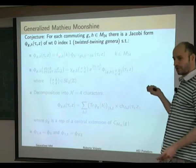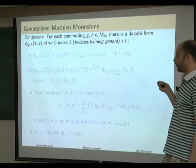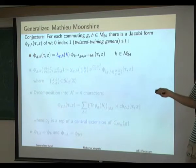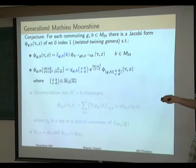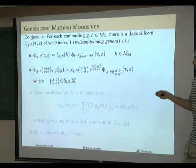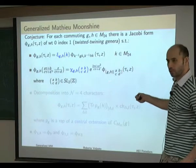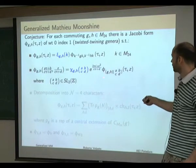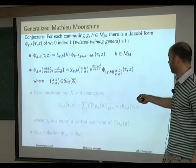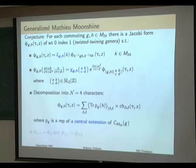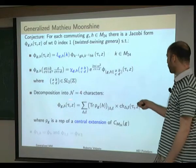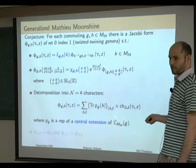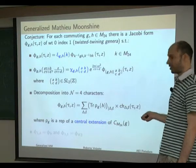The twisted twining genera can be given by a path integral with twisted periodicity conditions, and we expect this path integral to be invariant under some subgroup of SL(2,Z) that preserves these conditions up to conjugation in the group G. These properties help us formulate a precise conjecture for generalized moonshine: for each commuting pair in M24, there must be a weak Jacobi form of weight zero and index one, invariant under conjugation up to a phase, with twisted twining genera transforming into each other under SL(2,Z) transformations.